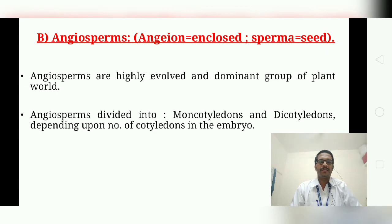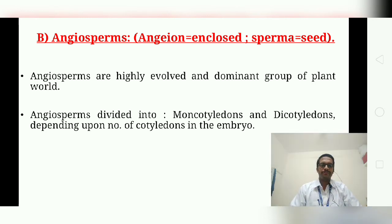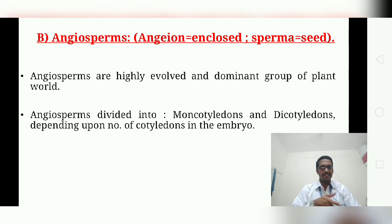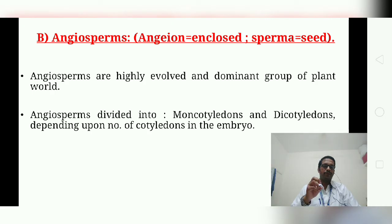The next part is Angiosperms. 'Angio' means enclosed and 'sperma' means seed. Angiosperms are the most highly evolved and dominant group of plants in the world. They are the higher flowering plants in which seeds and ovules are enclosed in the ovary wall, which develops into a fruit — the fruit wall is called the pericarp.